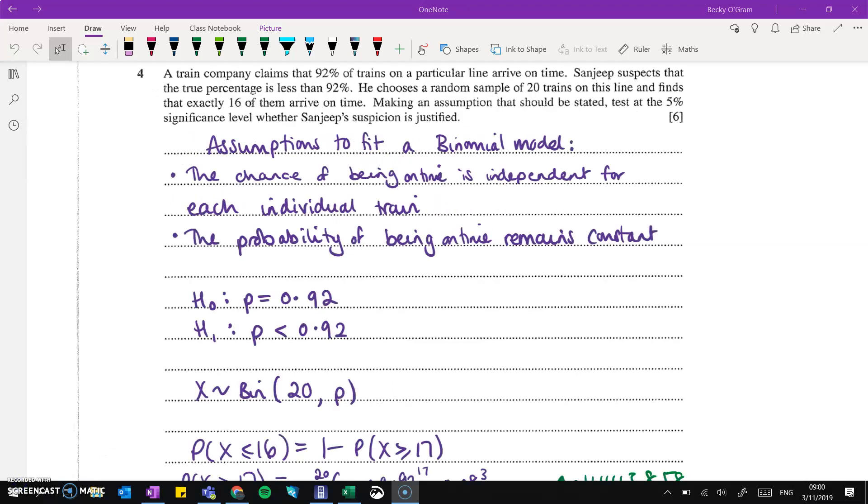Question four is hypothesis testing. We've got a 92% chance of trains arriving on time. Sanjeev thinks that that's wrong and the percentage is actually less than that. In his sample of 20 trains, he found 16 of them were on time. Now we're going to apply a binomial model, so we need to state the assumptions that were needed for that. And that is that the chance of the train being on time is independent for each individual train. And the probability of those trains being on time remains constant.